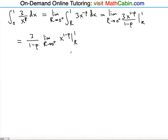Now let's explore the values of p and see where we get convergence. First case: p is greater than 1. If p is greater than 1, what is 1 minus p going to be? If you subtract p from both sides of that inequality, 1 minus p is less than 0. So 1 minus p is negative, and we're going to treat this exponent as negative.